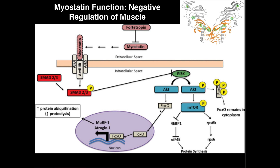So if we want skeletal muscle growth, we have to have muscle protein synthesis. In the context of the signaling pathway, there are really three things that we need in order for effective muscle protein synthesis to occur. The first thing is we have to have this protein called AKT phosphorylated. The second thing is we need this protein called mTOR to be active, and in order to activate mTOR, it has to be phosphorylated as well. The other thing that has to happen is we have to have this FOXO transcription factor continue to remain in the cytoplasm, and the way we do that is through phosphorylation.